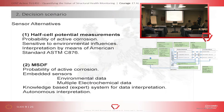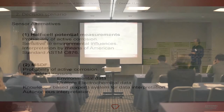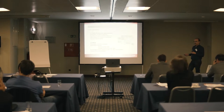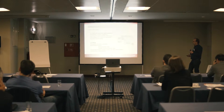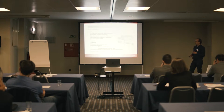We want to apply the value of information concept using two alternatives for sensing. The first one is, let's say, the more traditional half-cell potential measurements — also potential measurements. And the other one, the alternative, is the aforementioned multi-sensor sensor node.